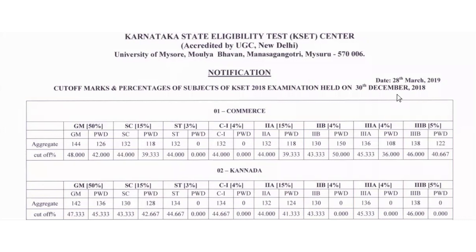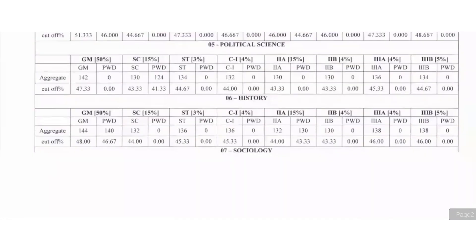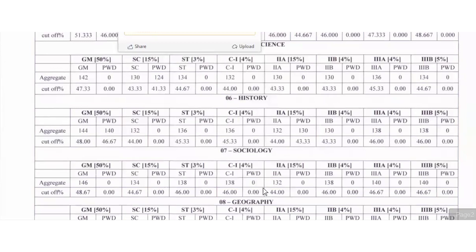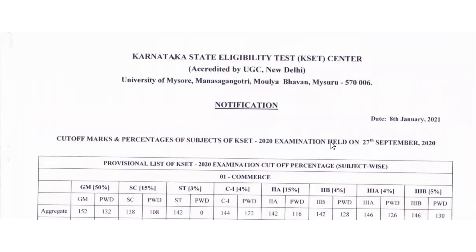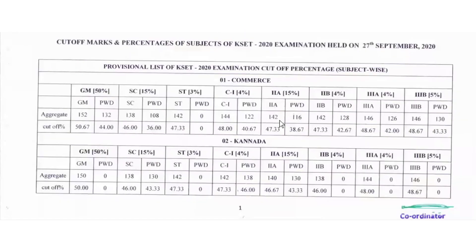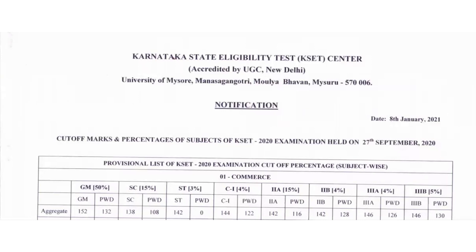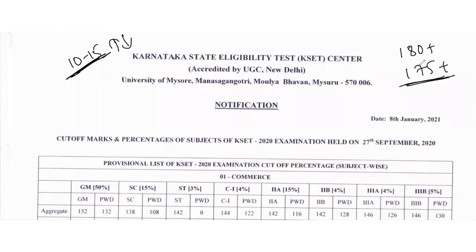This is also for the rest of the subjects — cutoff marks and percentage for all 41 subjects in KSET. The 2018 exam had results released in 2019, and the 2020 exam was held on 27th September with results released on 8th January. Based on this analysis, around 10 to 15 marks variation is expected. If you are around 180 plus or somewhere around 175 plus, you are in the safest range.